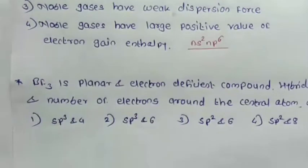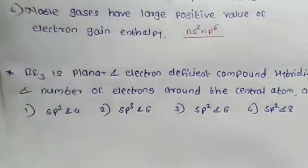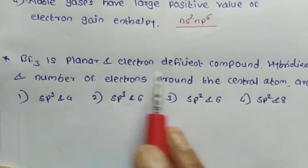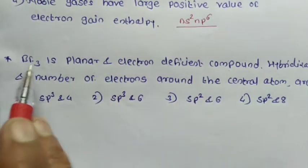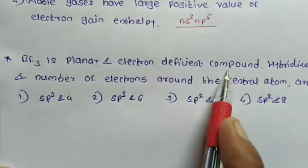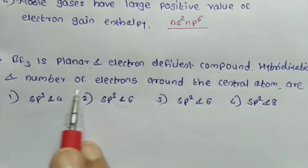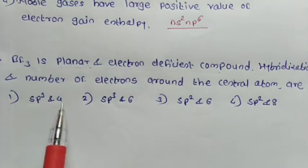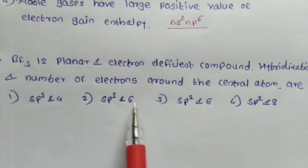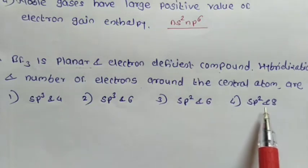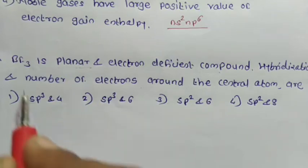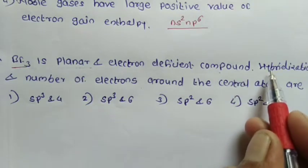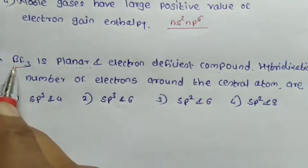Second question: BF3 is a planar and electron deficient compound. Find the hybridization state and number of electrons around the central atom. Options are: (1) sp3 and 4, (2) sp3 and 6, (3) sp2 and 6, (4) sp2 and 8. For BF3 (boron trifluoride), which is planar and electron deficient, find the hybridization state and number of electrons around the boron atom.